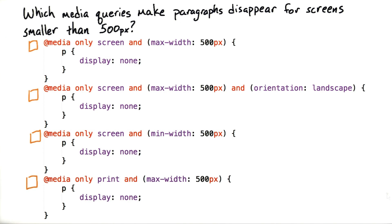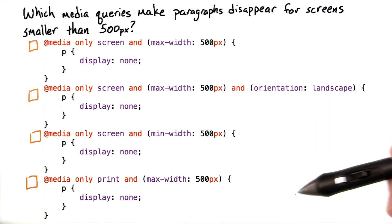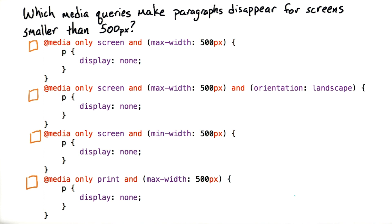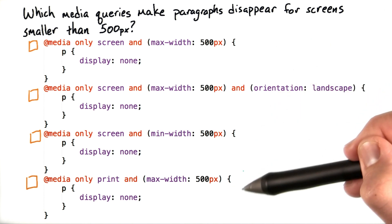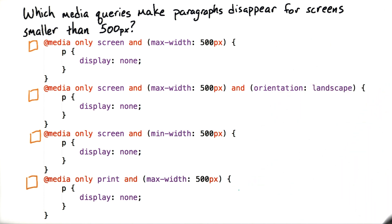For this quiz, I want you to experiment a little bit. Which of these media queries will make paragraphs disappear when screens are smaller than 500 pixels? In the instructor notes, you'll find a sample HTML file, which should look pretty familiar. Try adding these styles to main.css and see what happens.